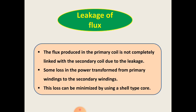Next, leakage of flux. The flux produced in the primary coil is not completely linked with the secondary coil due to leakage, and this results in the loss of energy. This loss can be minimized by using a shell type of core.